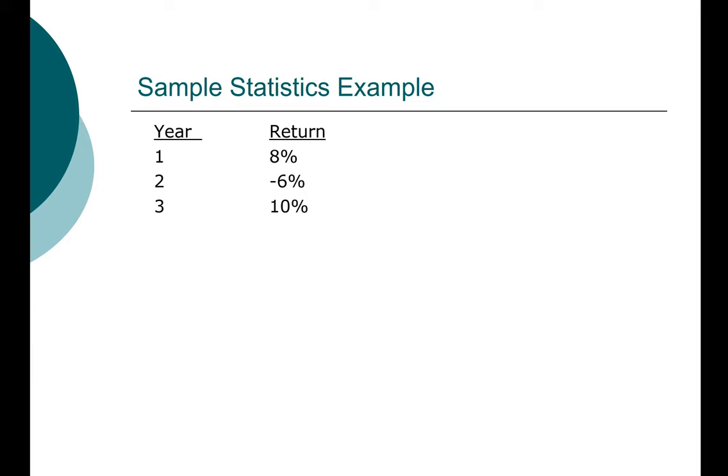We have collected three years of data. We have returns from year 1, year 2, and year 3 on a particular stock. This stock generated an 8% return in year 1, a loss of 6% in year 2, and a return of 10% in year 3. First thing we're going to do is compute the average. The average return will be 8% plus negative 6% plus positive 10% divided by 3 because we have three years worth of data.